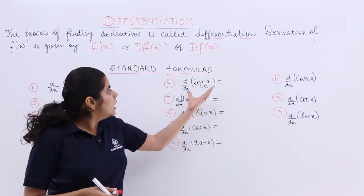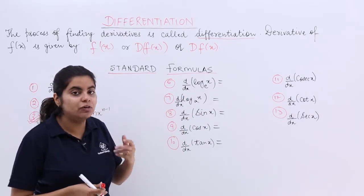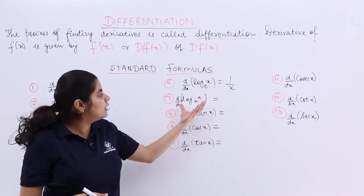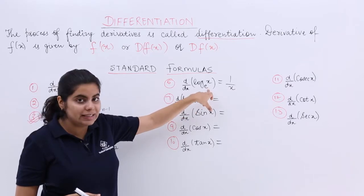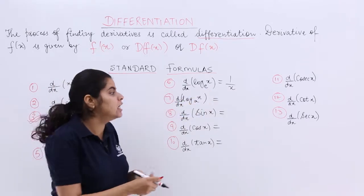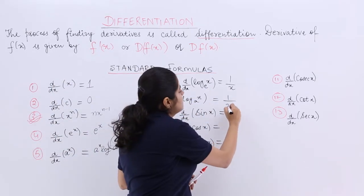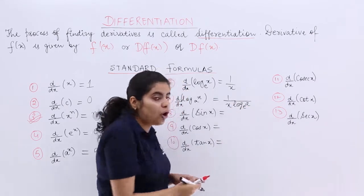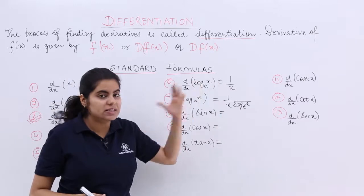Next is what? Log x. Derivative of log x is nothing but 1 by x. Next is derivative of log x but the base is not e this time. It is base a. So the answer is 1 by x log a to the base e. In the denominator, you will have the base.